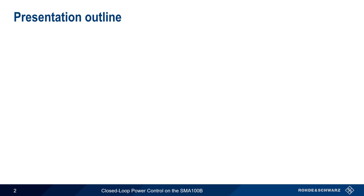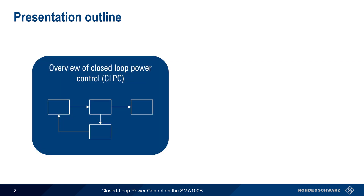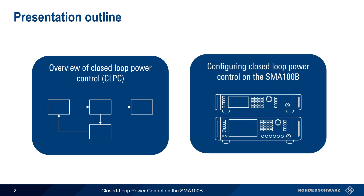This presentation is divided into two sections. The first is a general technical overview of closed-loop power control and why this is important in many RF applications. The second goes step by step through how to configure closed-loop power control on Rohde & Schwarz SMA100B Analog Signal Generators. Note that although we'll be using the SMA in this presentation, closed-loop power control is implemented and similarly configured on most Rohde & Schwarz Analog and Vector Signal Generators.